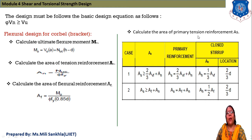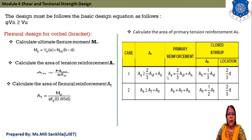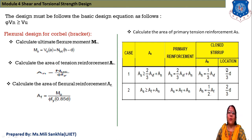Next, calculate the area of primary tension reinforcement AS. If AS ≥ (2/3)AVF + AN, then the primary reinforcement AS = (2/3)AVF + AN. The closed stirrup area AH = (1/3) × AVF, and the location of stirrups is within 2/3 of the effective depth.